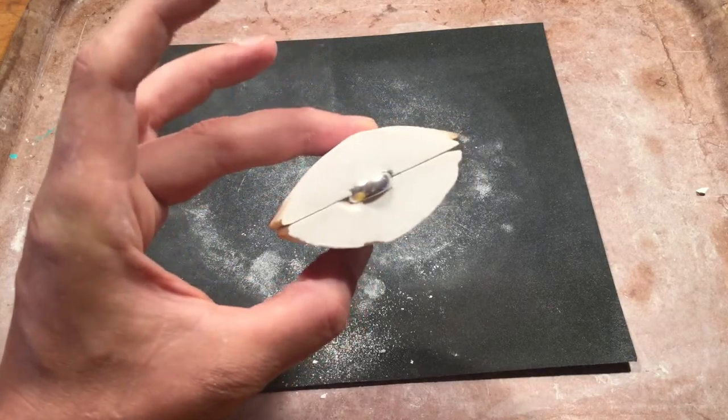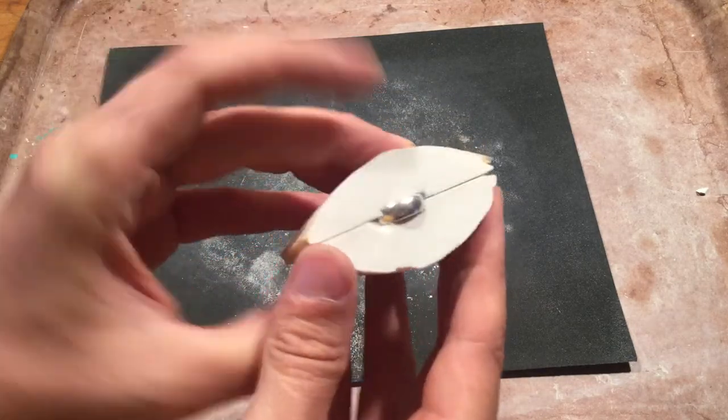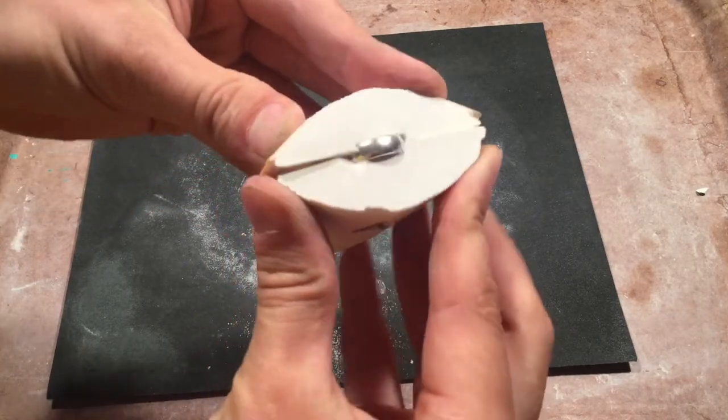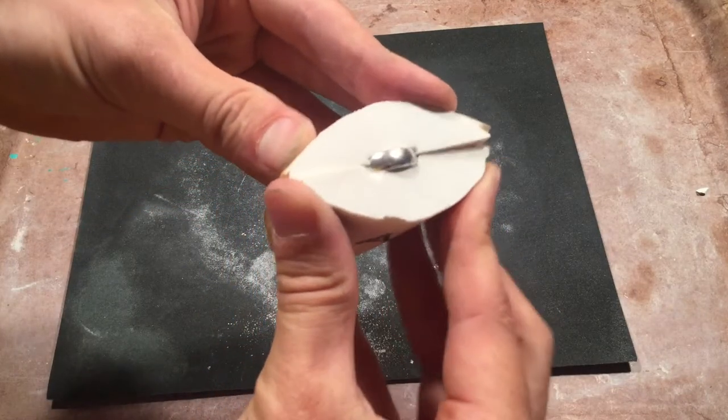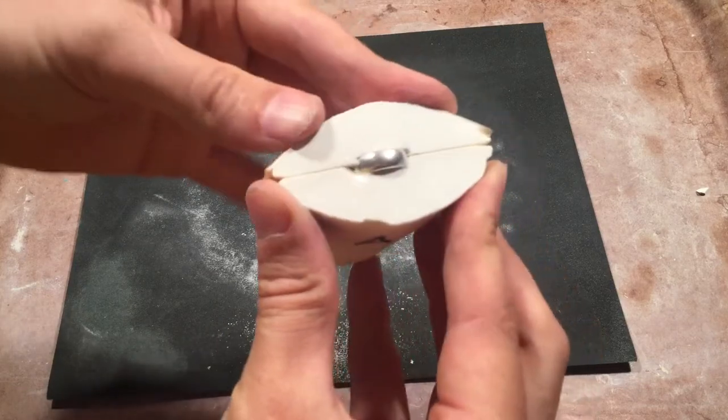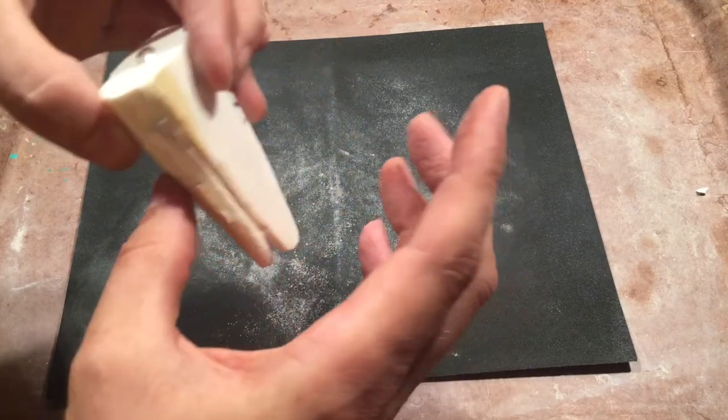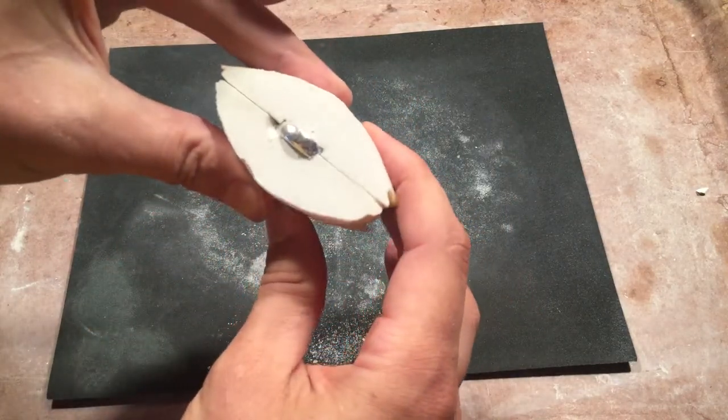Once you have your band ring embedded in the cuttlefish, you want to make sure that you listen for the signature rubbing. That's what ensures you have a nice gasket, like an airtight seal between the cuttlefish back and front.